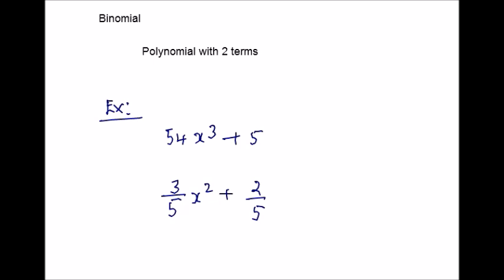Polynomial is a mixture of terms, coefficients and constants. In this example, you can see a whole number as coefficient and fractions as coefficients. Even the constants can be of any type — it could be a fraction, decimal or a whole number.